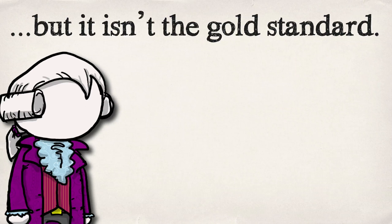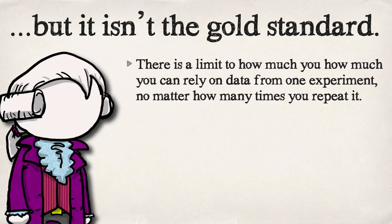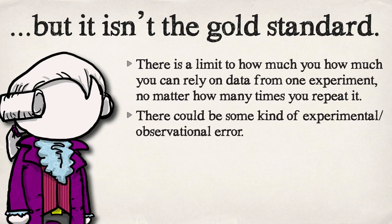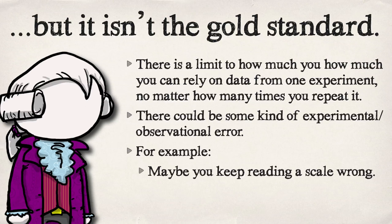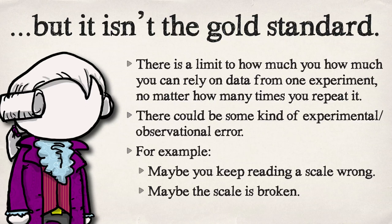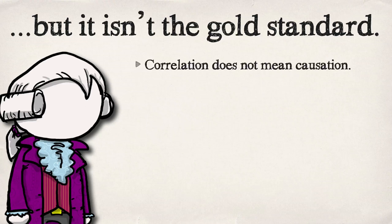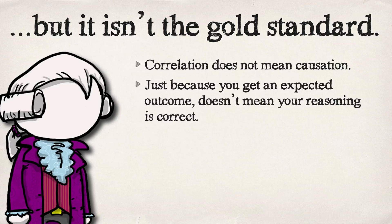We've got a lot of replication of our results, but replication isn't enough. There's only so much you can get from one test even if you do it many many times. There could be some kind of error — maybe you don't know how to read the scale correctly so you keep reading it incorrectly every single time, or maybe the scale itself was broken. Just because you keep getting the same result doesn't mean you understand the cause. What you predict is causing this thing might not actually be it, but you haven't really explored any other options.